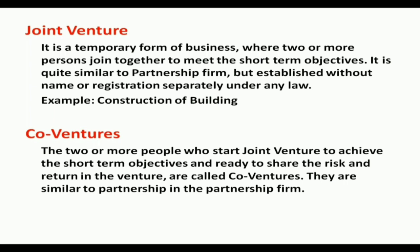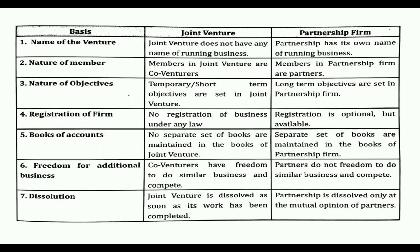The two or more people who start a joint venture to achieve short-term objectives and are ready to share the risk and returns are called co-ventures. They are similar to partners in a partnership firm. Co-ventures share profits and losses based on agreement or equally, and once the venture objective is completed they close the venture. Unlike partnership, there is no separate act governing joint ventures.